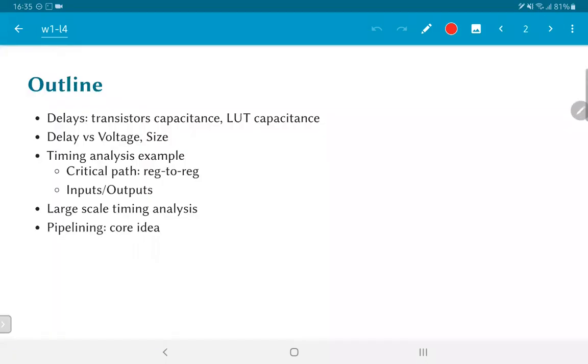So the outline: we'll first look at where delays come from. Transistors have capacitance, lookup tables have capacitance, currents are used to charge those capacitances and so on. What are the relationships between this delay and various aspects of the circuit itself, like the supply voltage, the size of the transistors and so on.